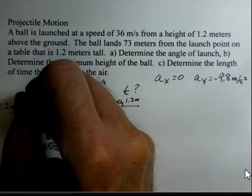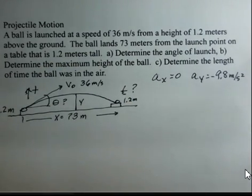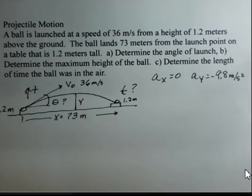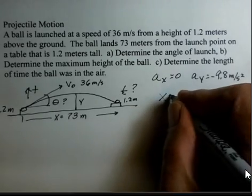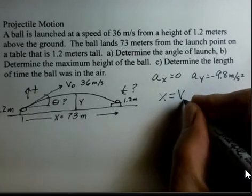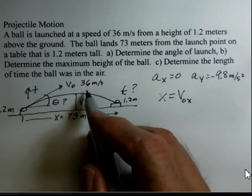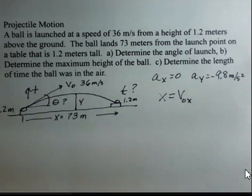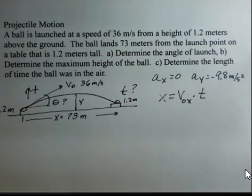I'm working this problem with up as the positive direction. No acceleration in the x direction simplifies the x equation. In the x direction, we simply have x equals the original speed in the x direction, the component of this 36 meters per second in the x direction, multiplied by the time that we're in the air.